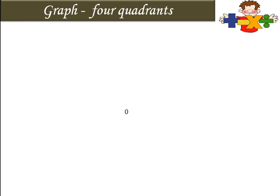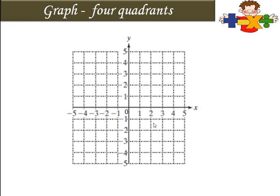Before that let us look at the graph. This is the graph. We know that this horizontal line is called the x-axis and this vertical line is called the y-axis. This part of the x-axis is positive and this part is negative. The upper part of the y-axis is positive and this part is negative. These two axes, x-axis and y-axis, are perpendicular to each other at point O.